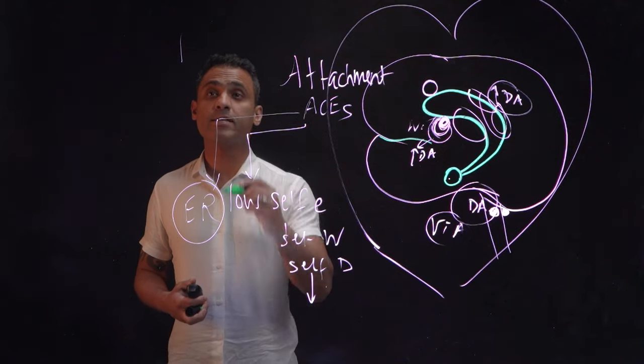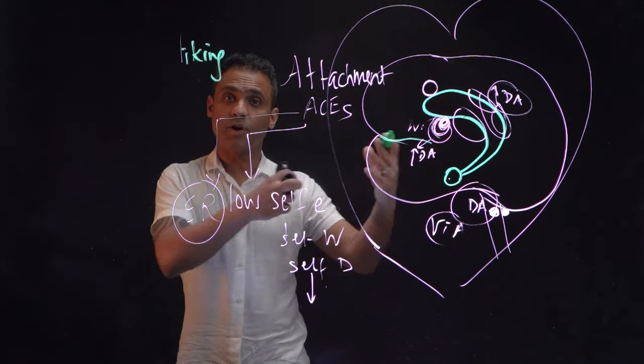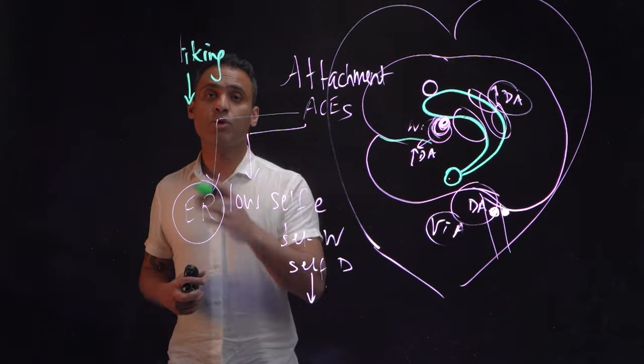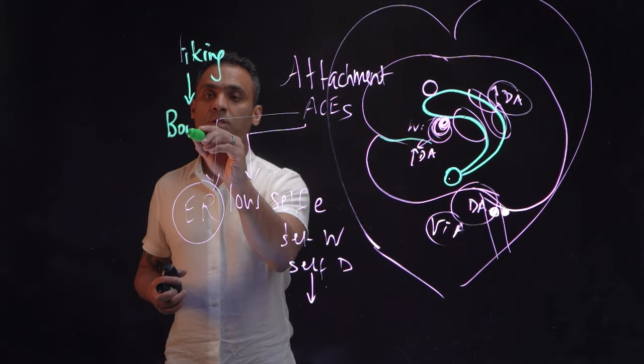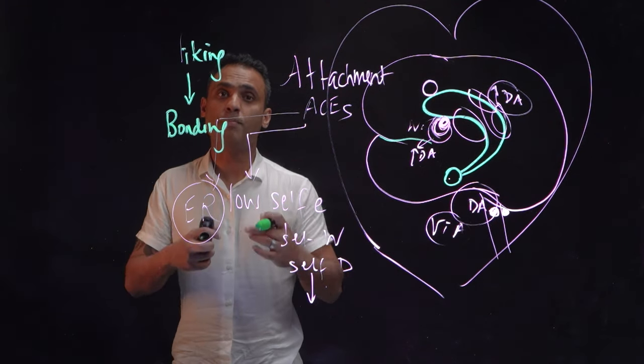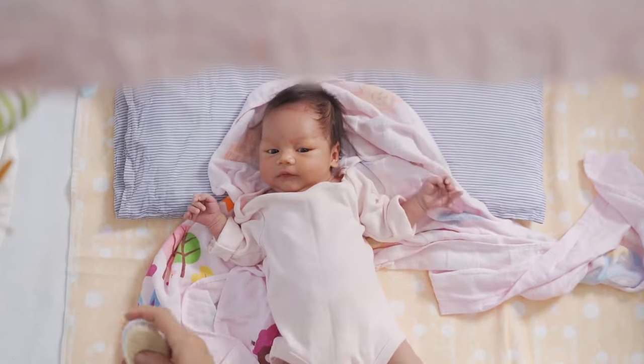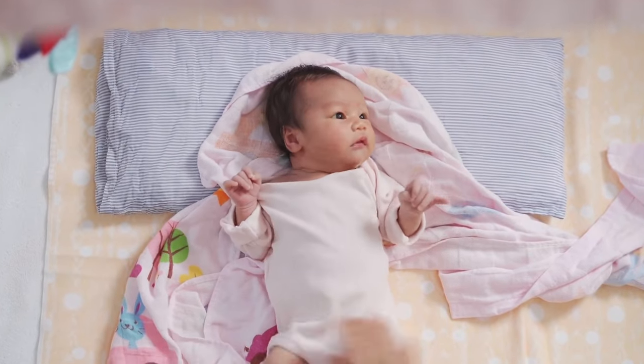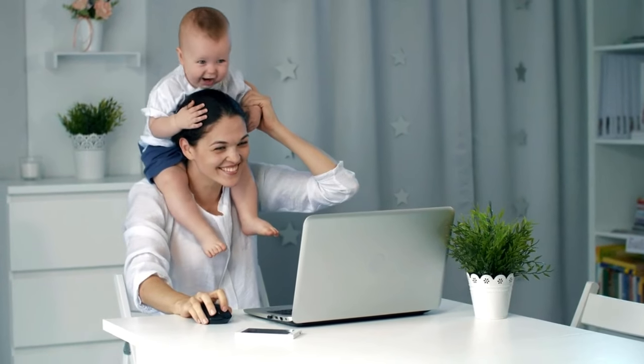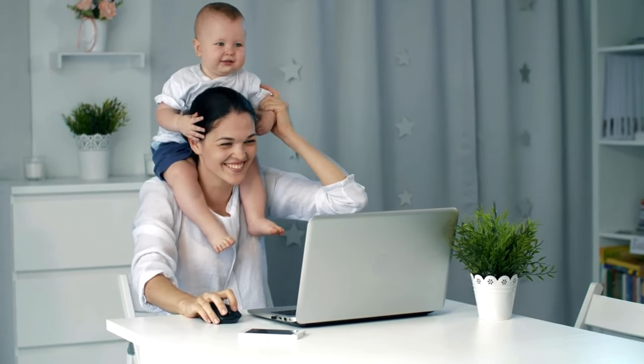So initially there is liking, which we said involves dopamine, opioids, and this liking then moves towards bonding. And this is where we talked about the other neurotransmitters coming in, in order to form bonds. Now, most social bonding processes stem from the quality of attachment a mother or a caregiver builds with their infant during early life.